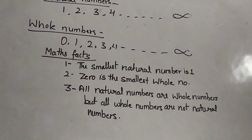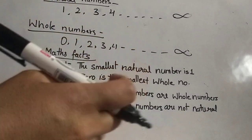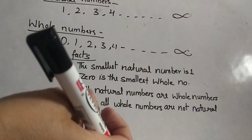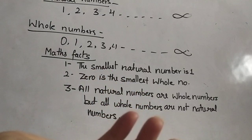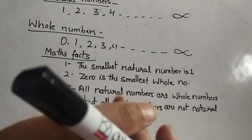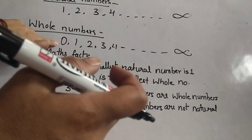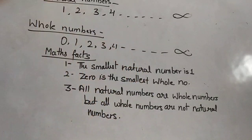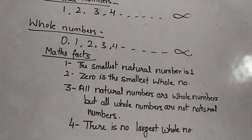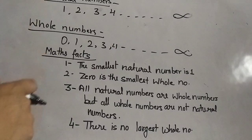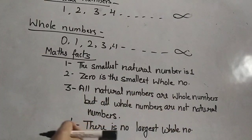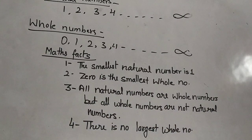Why? Because all natural numbers like 1, 2, 3, 4, 5 are whole numbers. But 0, which is a whole number, is not a natural number. Also, there is no largest whole number. So these are the math facts about natural numbers and whole numbers.